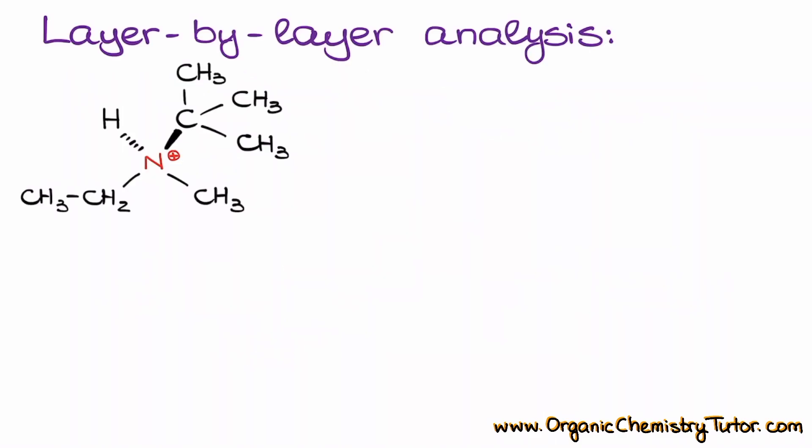In order for us to assign the R and S stereodescriptors to the nitrogen atom in this molecule, we need to do a layer-by-layer analysis just like we've learned in the previous tutorial. On the first level here, what we are going to see is that nitrogen is connected to a hydrogen and three other carbon atoms. Since hydrogen has the lowest priority than either of the carbon atoms, it's going to have the lowest priority overall, and we are going to give it priority number four. On the next level, however, we can see that we've got three carbons over here. So we have carbon, carbon, and carbon.